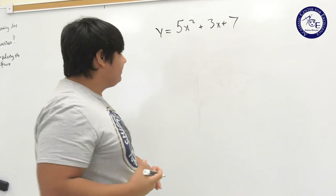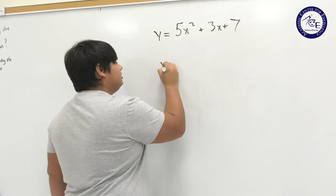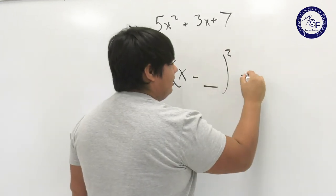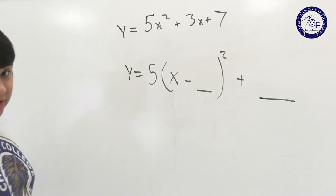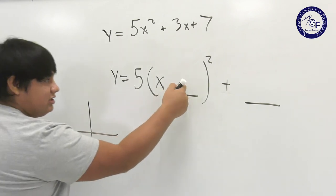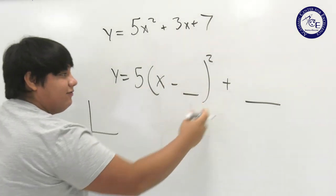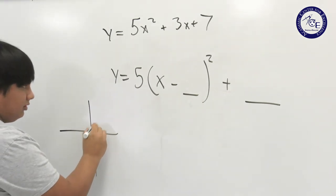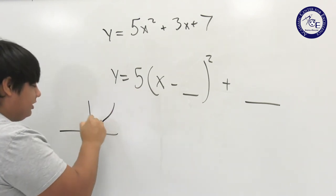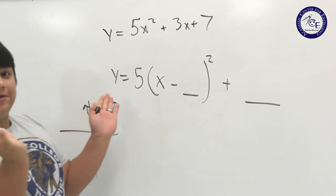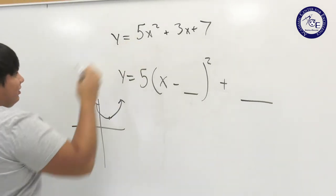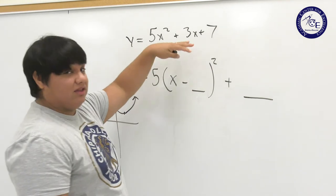The goal is to get something that looks like y equals 5 times (x minus some number) squared plus some other number - vertex form. The reason we want it like this is because if you drew the problem, this number tells you how far you go over in x, this number tells you how far you go over in y - so the vertex is somewhere over here. And this leading number tells you the slope essentially: the bigger this number the wider it is, the smaller the number the shorter it is.